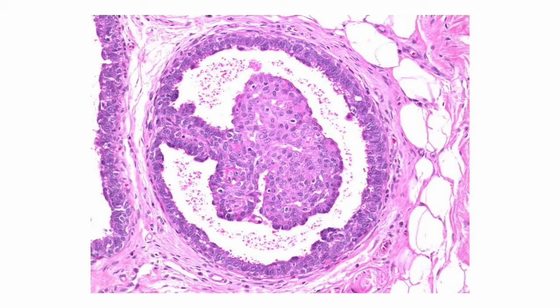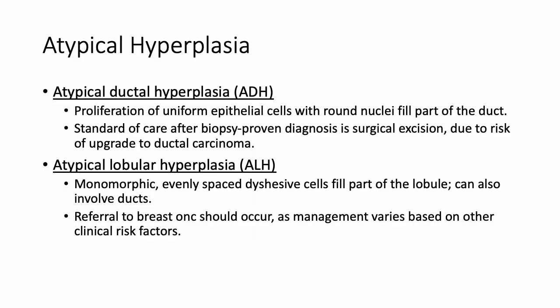If we were to see a slide of an intraductal papilloma, it would show a monotonous array of papillary cells that grow from the wall of a cyst into the lumen. Occasionally, CREOG throws one of these histology images at us.